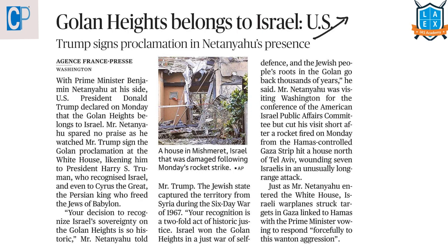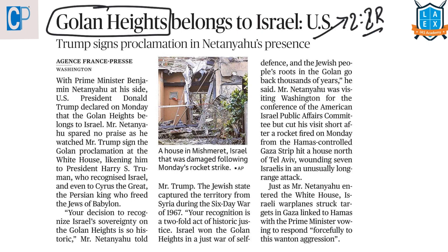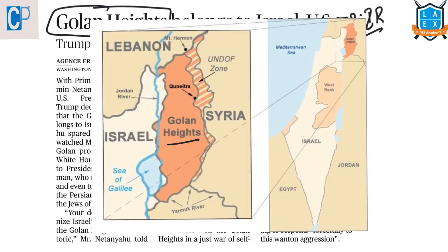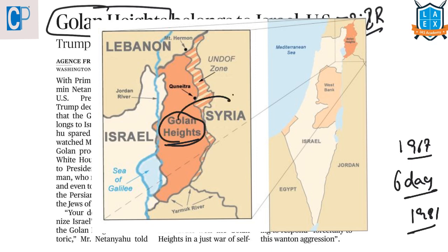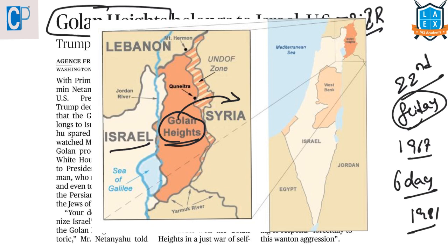The next article is 'Golan Heights Belong to Israel: United States,' under GS Paper 2, International Relations. The key point is the location of the Golan Heights: it was part of Syria until 1967, but Israel captured most of this area in the Six Day War and occupied it, then annexed it completely in 1981. A more detailed discussion of the Golan Heights issue between Israel and Syria was covered in Friday's March 22nd video — please refer to that video.